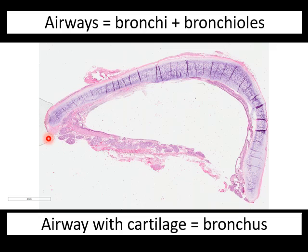Airways is an umbrella term encompassing both bronchi and bronchioles. Bronchi are the bigger airways that contain cartilage and submucosal salivary-type glands. Bronchioles are smaller — usually less than a millimeter — and lack both cartilage and submucosal glands. The best way to tell bronchi and bronchioles apart is by the presence of cartilage and submucosal glands. The lumens of the alveoli are called air spaces, distinct from airways.